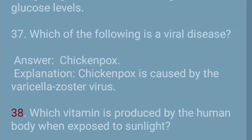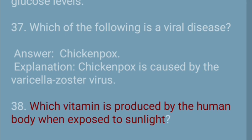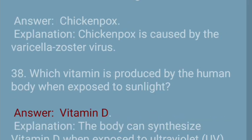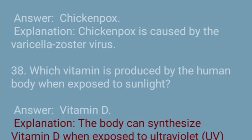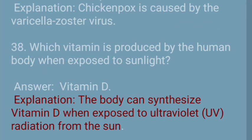Question 38: Which vitamin is produced by the human body when exposed to sunlight? Answer: Vitamin D. Explanation: The body can synthesize vitamin D when exposed to ultraviolet (UV) radiation from the sun.